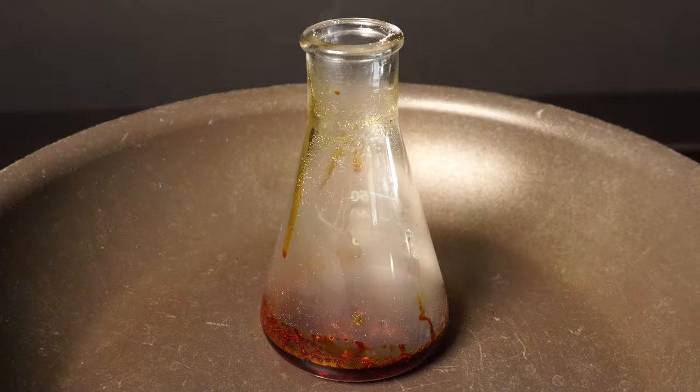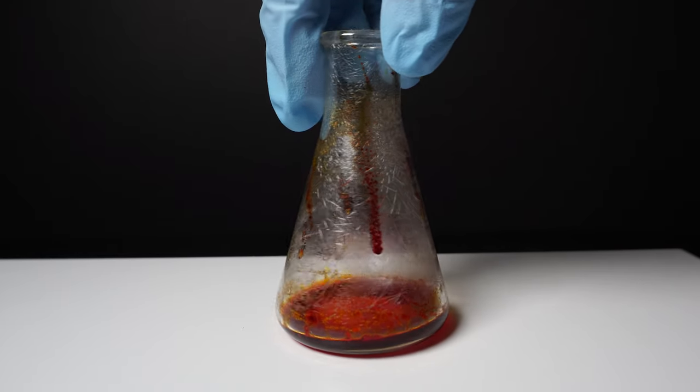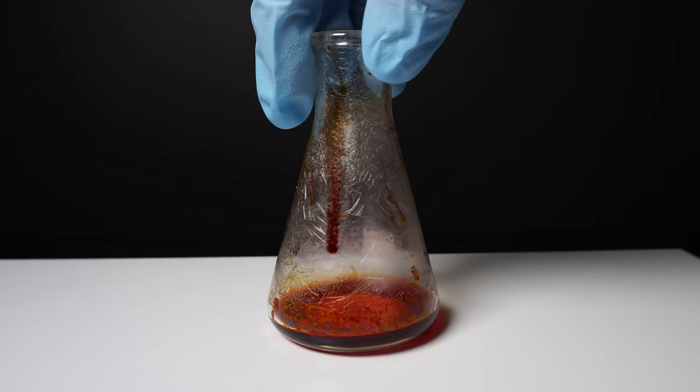As the reaction slows down, we might have to stir it around a little bit to get everything to react. Once it is cooled, we can see the fluorescein crystals on the side of the flask and a red thick oil at the bottom.